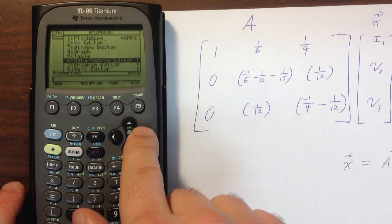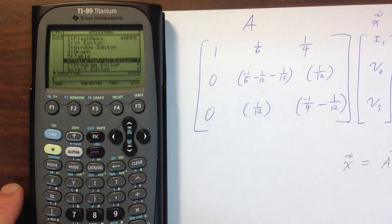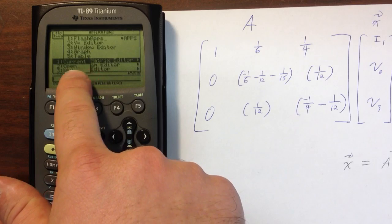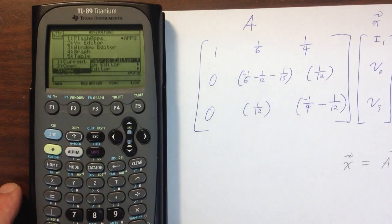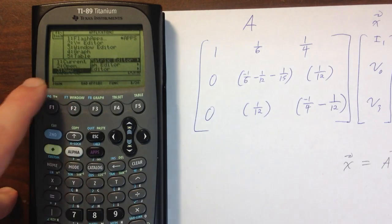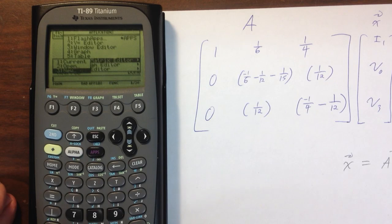We're going to put in our A matrix. The first thing we're going to do is push our apps button, and now I'm going to select the sixth option. It says data slash matrix editor. I'm going to push enter, and now I can either open a current, open an existing variable, or I can create a new variable. All my variables have been cleared, so I want to create a new variable. I could just push the three button on the calculator, and that would be a shortcut.